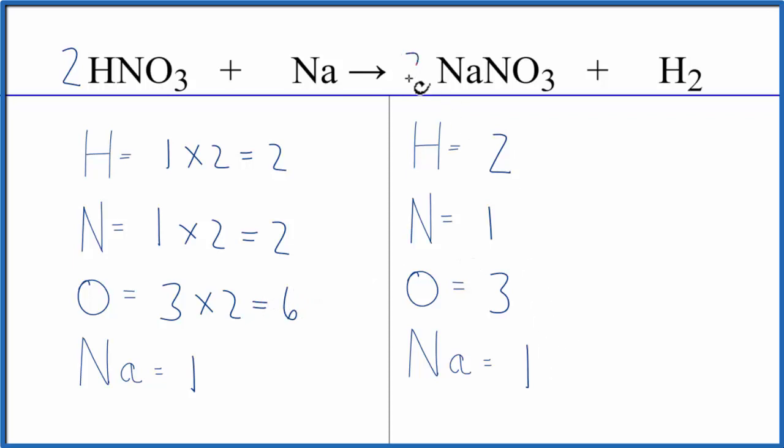Let's put a two in front of the NaNO3 to balance the oxygens. We have three times two. That would give us six. So those are balanced. One times the two. That also balances the nitrogens.